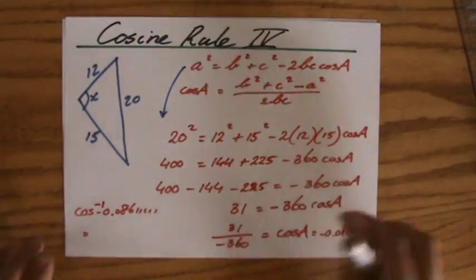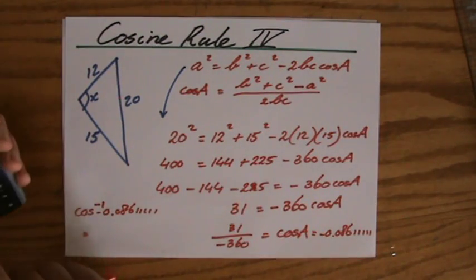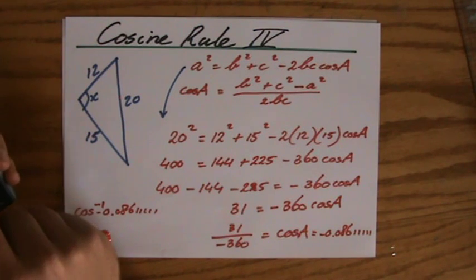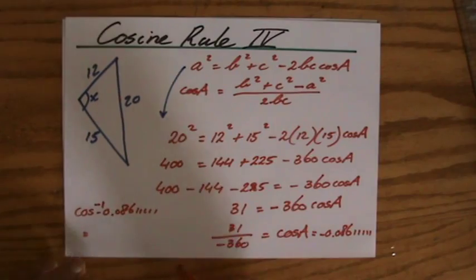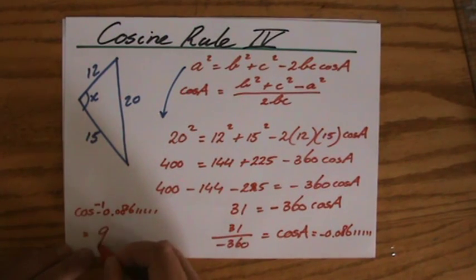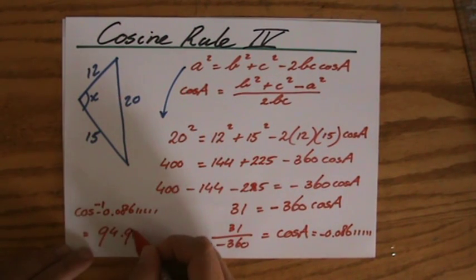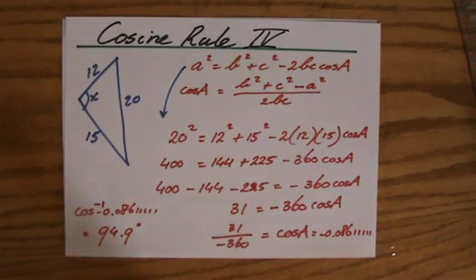And, that equals... Oh, so, I'm going to grab my calculator. So, shift cosine of that answer to one decimal place at angles 94.9 degrees. Okay, so, that's my final answer.